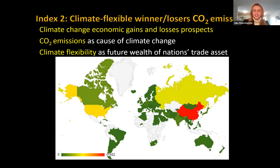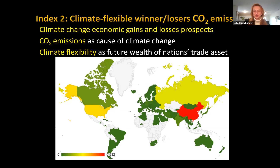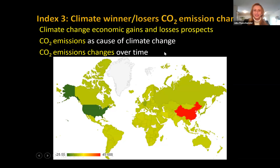In the second index, I also integrate climate flexibility — which I see as a future wealth of nations. I use data on different temperature zones that a country can offer, making the economic argument that this is a trade asset. The more climate zones you have — skiing, ocean swimming — all in one country, the greater your trade prospects. Countries with high climate flexibility should face a higher burden to protect the earth from climate change. In the third index, I also factor in CO2 emission changes over time. Here you see the U.S., which in the first two indices was supposed to be paying into the solution, shifts from being a payment country to a country that would receive funds — setting economic incentives for countries to reduce CO2 emissions.